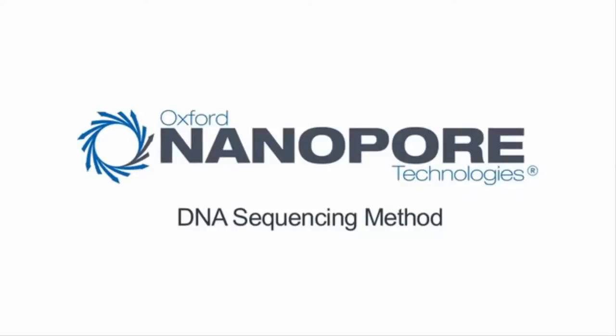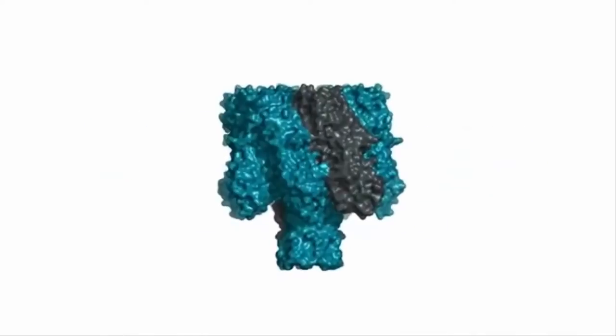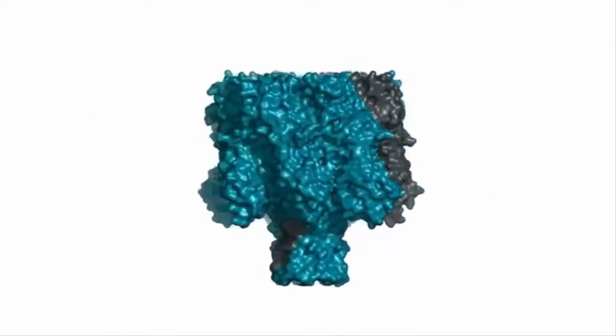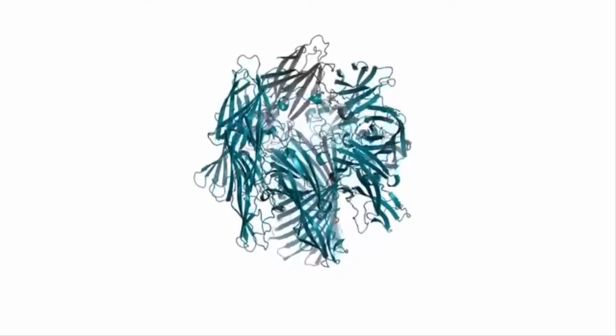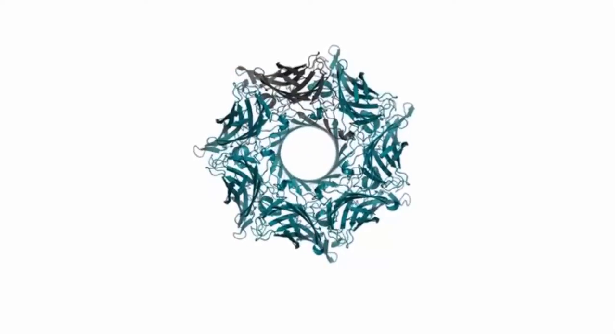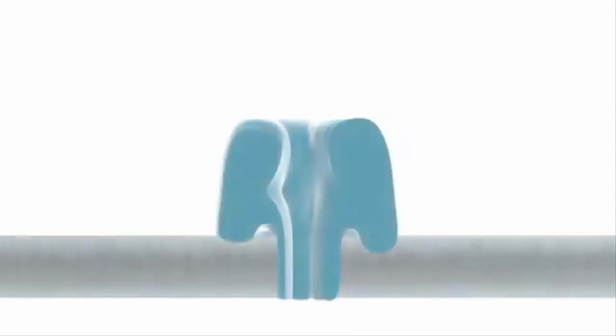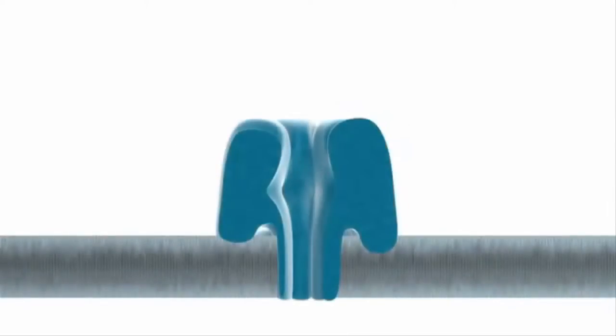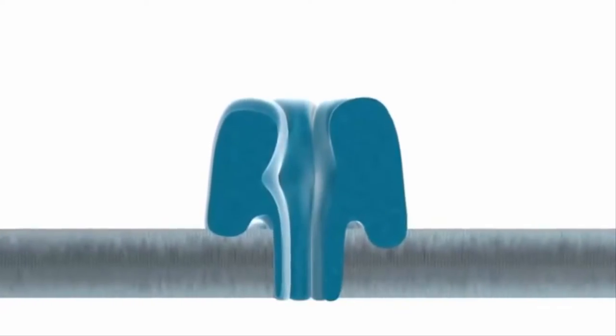Oxford Nanopore is developing a method of DNA analysis called strand sequencing. At the heart of strand sequencing is a protein nanopore. This model shows a typical nanopore made from protein. You can see that at the core of the protein is a hollow tube that is only a few nanometers in diameter. Oxford Nanopore designs and manufactures bespoke nanopore structures for a range of applications. In nature, nanopores form holes in membranes. In Oxford Nanopore's system, the nanopore is inserted into a membrane created by a synthetic polymer. This membrane has very high electronic resistance.